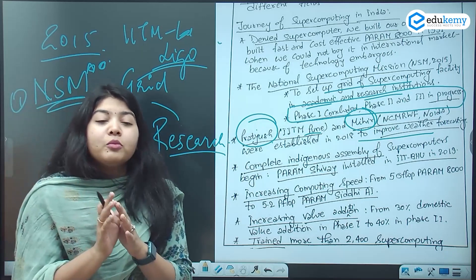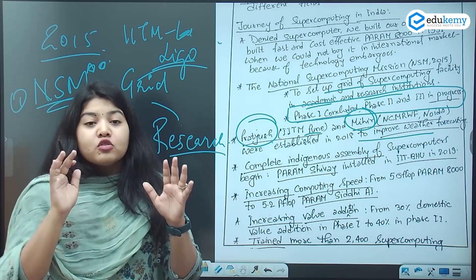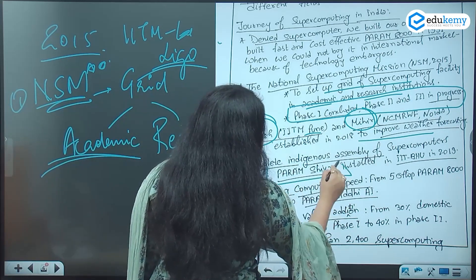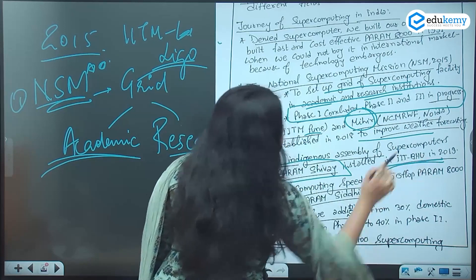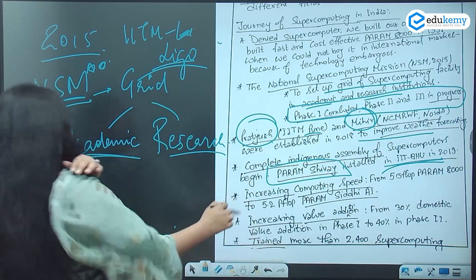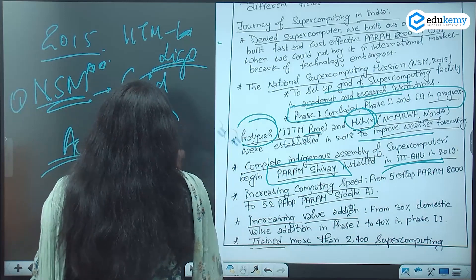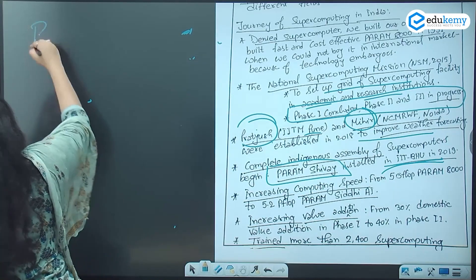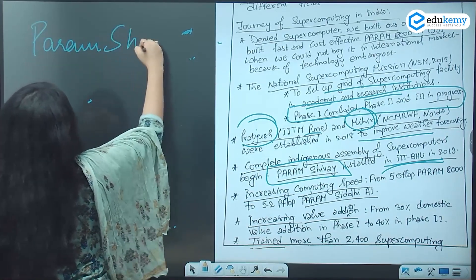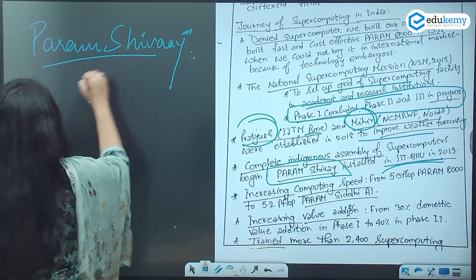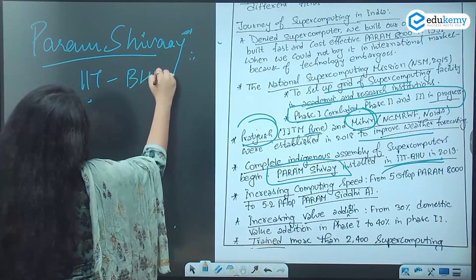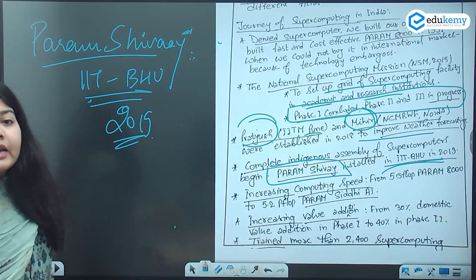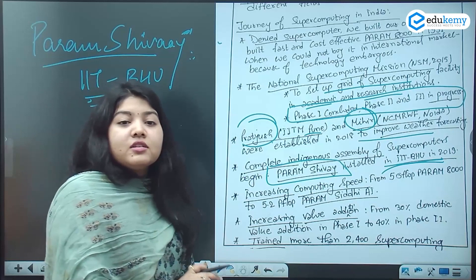Now came a supercomputer which was completely indigenous assembly — it was completely assembled in India — and that was Param Shivai, which is currently placed in IIT BHU. When was it placed? In the year 2019. The name is Param Shivai, located at IIT BHU, placed in 2019. What is the speciality? It is a completely indigenously assembled supercomputer.